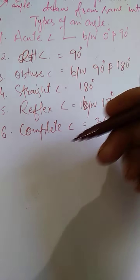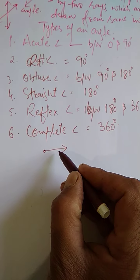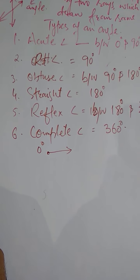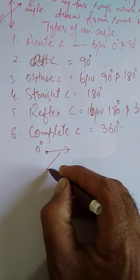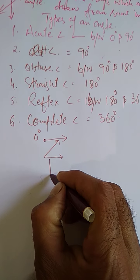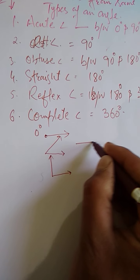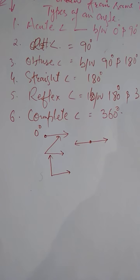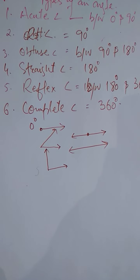Now for visual representations: if you have a ray, it represents a 0 degree angle. Angles are measured in degrees, or also in radians but that is a higher concept. If you draw a figure like this — two rays slightly apart from the same point — this is a representation of an acute angle.